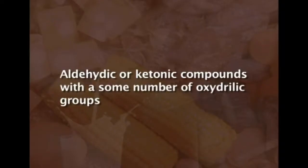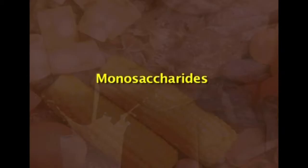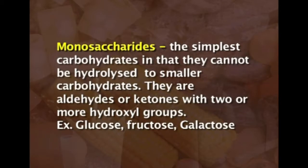Carbohydrates are defined as aldehydic or ketonic compounds with some number of hydroxyl groups, in addition to carbon, oxygen, and hydrogen. Some include nitrogen or sulfur. Based on the number of forming units, they are classified as monosaccharides — the simplest carbohydrates, which cannot be hydrolyzed to smaller carbohydrates. They are aldehydes or ketones with two or more hydroxyl groups. Examples include glucose, fructose, and galactose, which are six-carbon sugars.